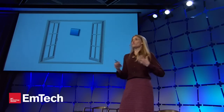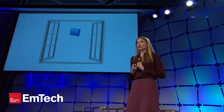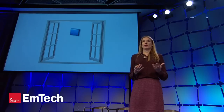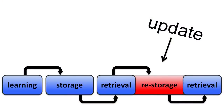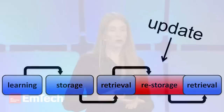Why would nature create such a window of opportunity to make memories vulnerable? We need to remember the fear — we need to remember what to predict. Why would it go away? A possible answer is: to update. So each time you retrieve a memory, it can incorporate new information available at the time of retrieval, making it more relevant to your current state.